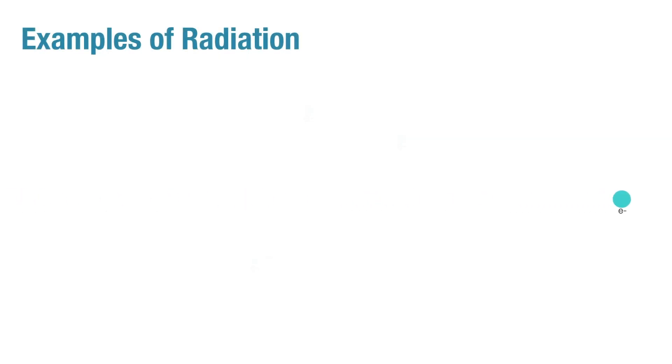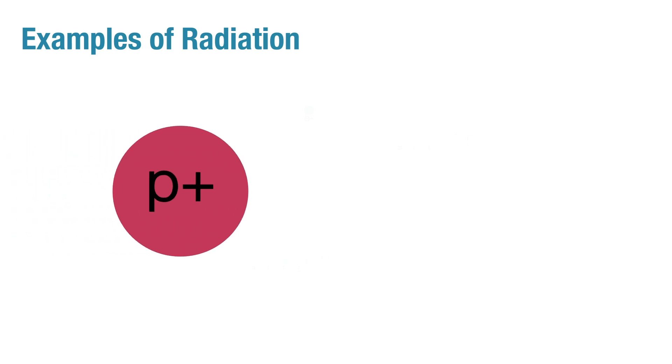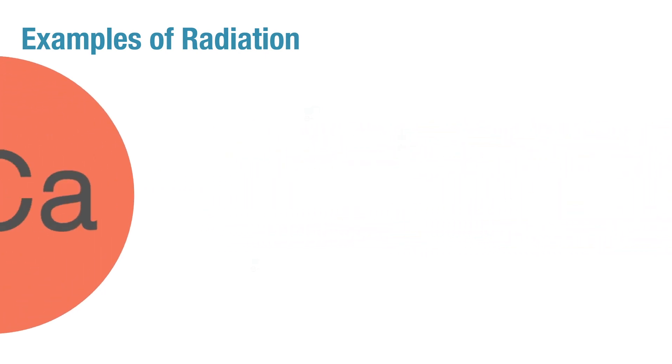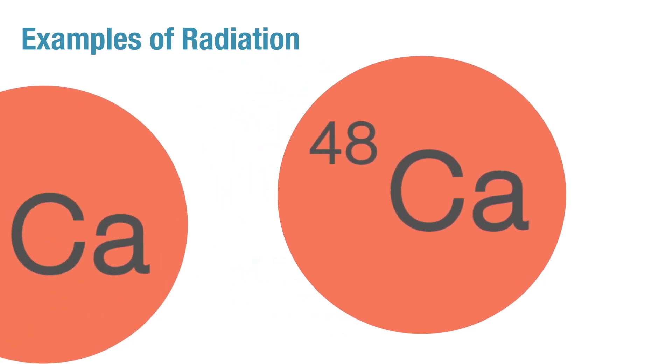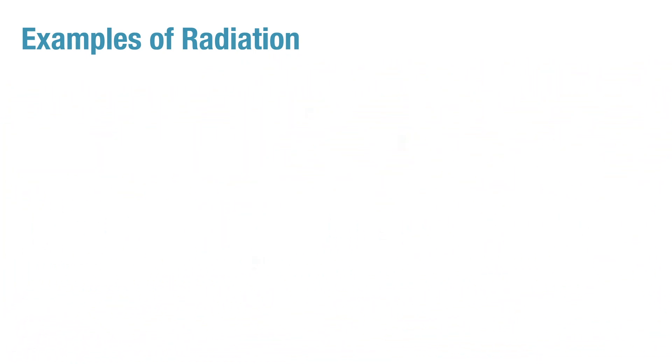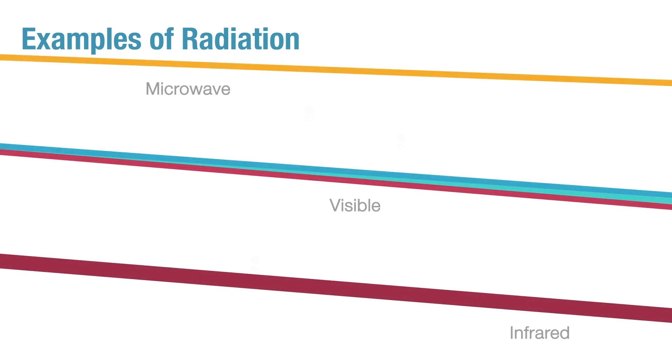So some examples of radiation could be electrons, light charged particles, protons, heavier charged particles, neutrons which are relatively heavy uncharged particles, nuclear fragments, even things like calcium 48 nuclei used in the synthesis of super heavy elements, as well as all of the different wavelengths of light, because light's nothing more than traveling energy.